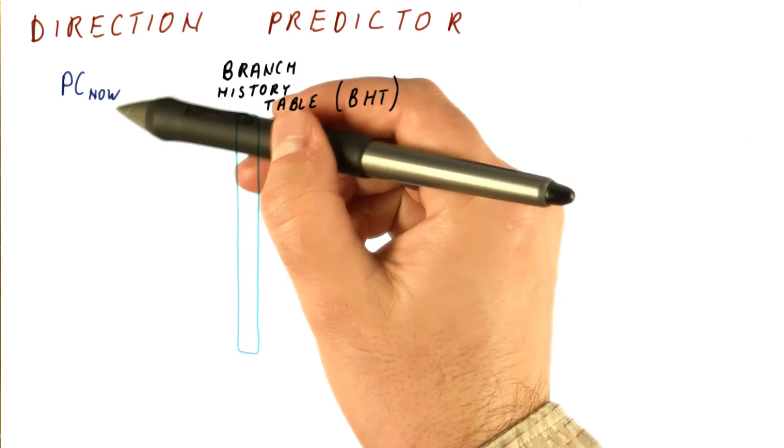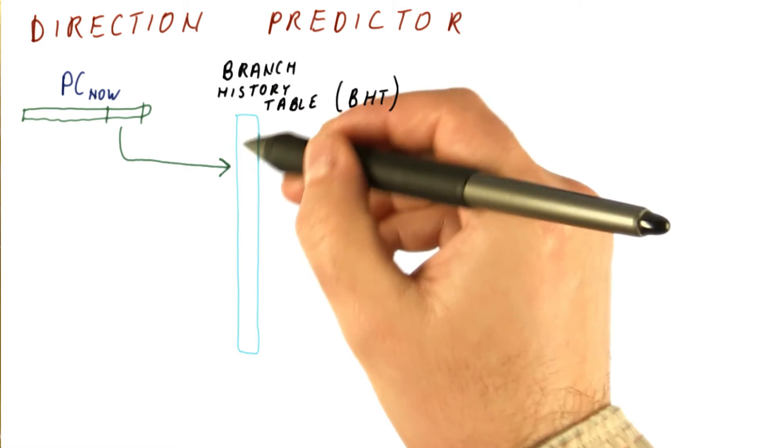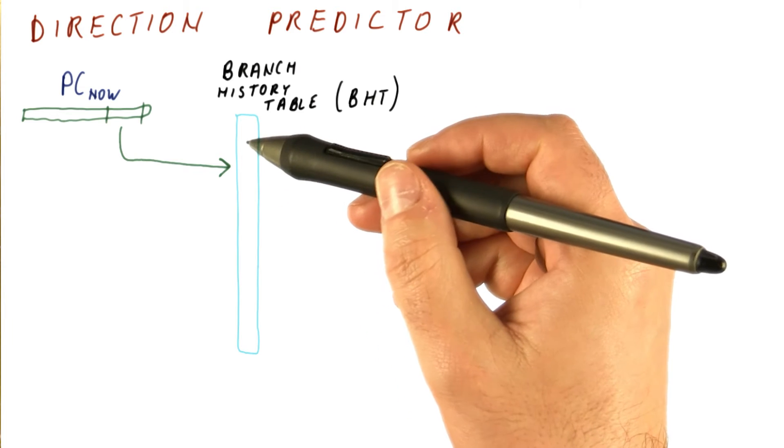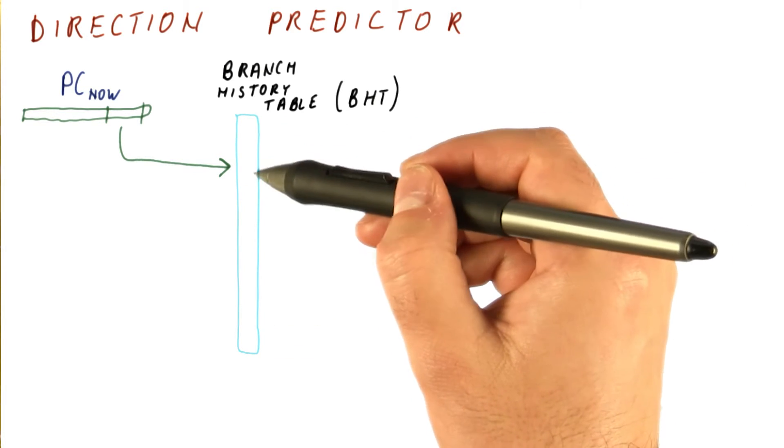We will take the PC of the instruction, grab the least significant bits, and that's what we index into this table with. So it's the same as when indexing into the BTB. But the entry here is much smaller.